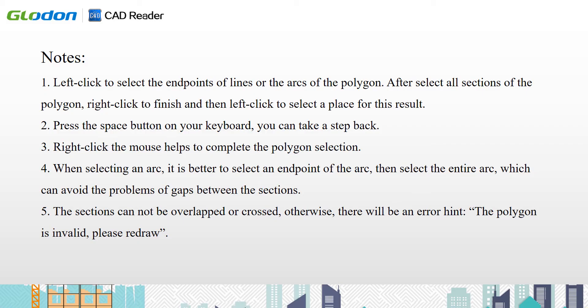Notice: left click to select the end points of lines or arcs of the polygon. After selecting all sections of the polygon, right click to finish, then left click to select a place for the result. Press the space button on your keyboard to take a step back. Right click helps to complete the polygon section. When selecting an arc, it is better to select an end point of the arc first, then select the entire arc, which can avoid the problem of gaps between sections. The sections cannot be overlapped or crossed; otherwise, there will be an error hint: 'The polygon is invalid. Please redraw.'